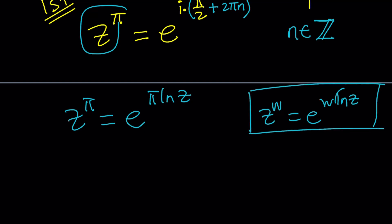And obviously, ln z is multi-valued because it has a complex piece. So this is going to be multi-valued. Make sense? That's why we kind of include the 2π n in there.